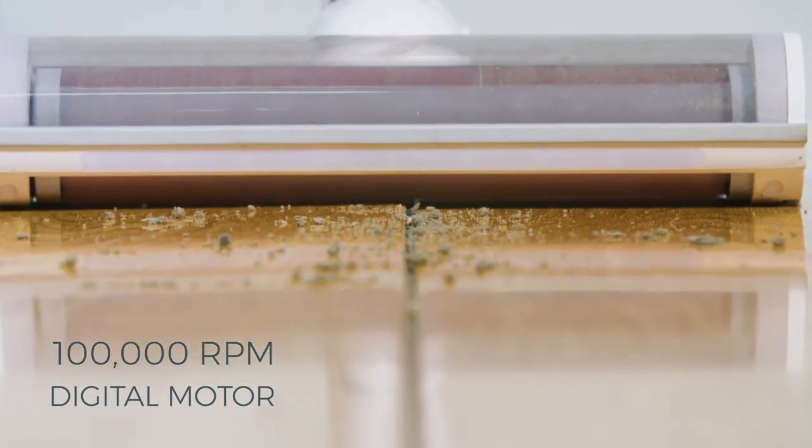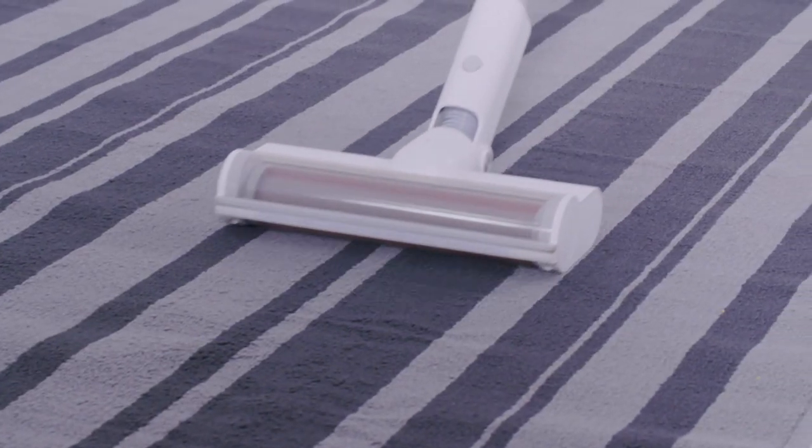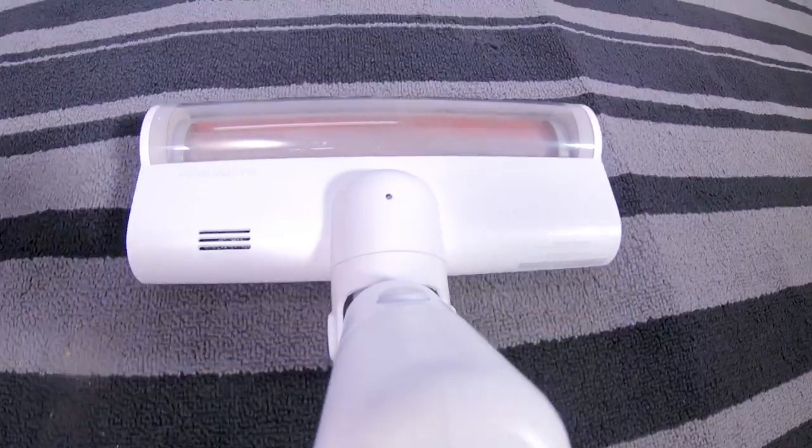The F8 uses powerful suction technology powered by a 100,000 RPM digital motor to get rid of all that excess dirt and dust cluttering up your home.